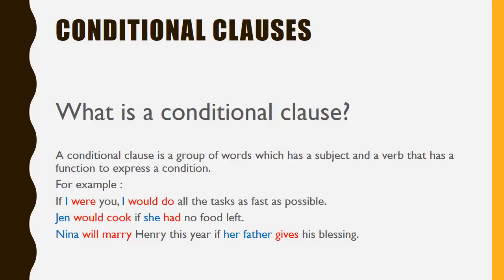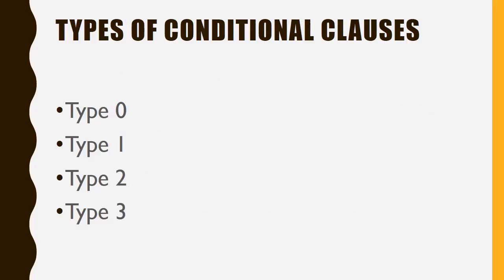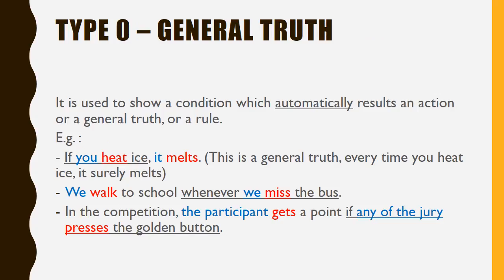Now let's focus on conditional clauses. A conditional clause is a group of words which has a subject and a verb, functioning to express a condition. For example: 'If I were you, I would do all the tasks as fast as possible,' 'Jane would cook if she had no food left,' 'Nina will marry Henry this year if her father gives his blessings.' There are four types: Type 0, Type 1, Type 2, and Type 3.